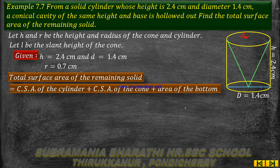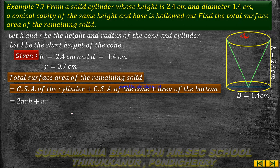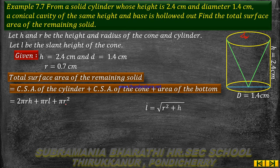The value of pi is equal to 22/7. So the total surface area equals 2πrh + πrl + πr², where l is equal to square root of h squared plus r squared.